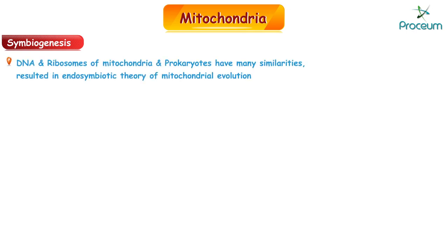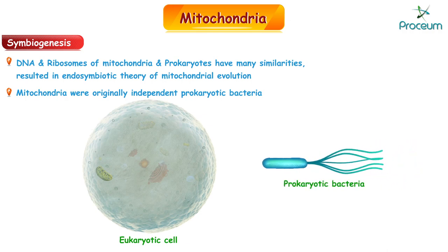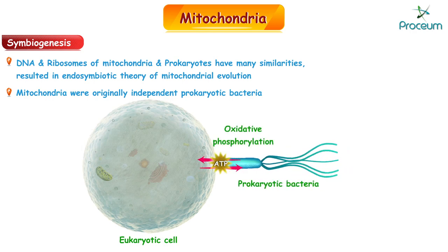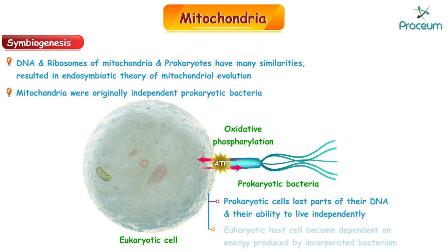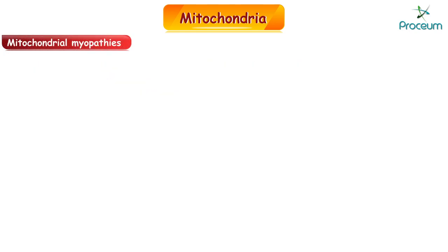The DNA and ribosomes of mitochondria and prokaryotes have many similarities. This led to the endosymbiotic theory of mitochondrial evolution: that mitochondria were originally independent prokaryotic bacteria with the ability to produce energy through oxidative phosphorylation and were eventually engulfed by eukaryotic cells. As a result, the prokaryotic cells lost part of their DNA and their ability to live independently, while the eukaryotic host cell became dependent on the energy produced by the incorporated bacterium.